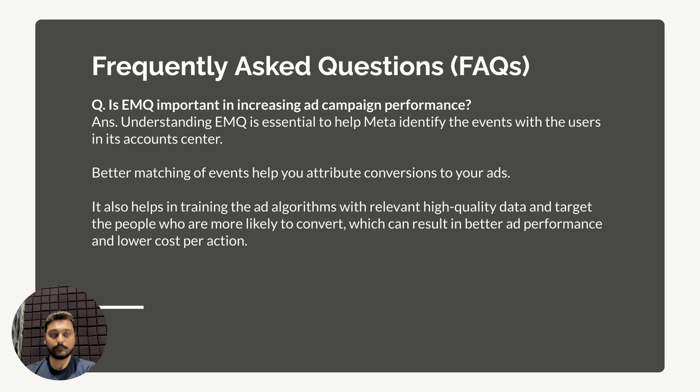Last question: is EMQ important in increasing ad campaign performance? EMQ is essential in helping Meta identify users and match them with events accurately. Once it attributes conversions accurately to your ads, it gives Meta the complete customer journey. The algorithms learn from this conversion data and train themselves. When you train the algorithm with high-quality, relevant first-party data, it targets people more likely to convert, resulting in better ad campaign performance and lower cost per purchase.